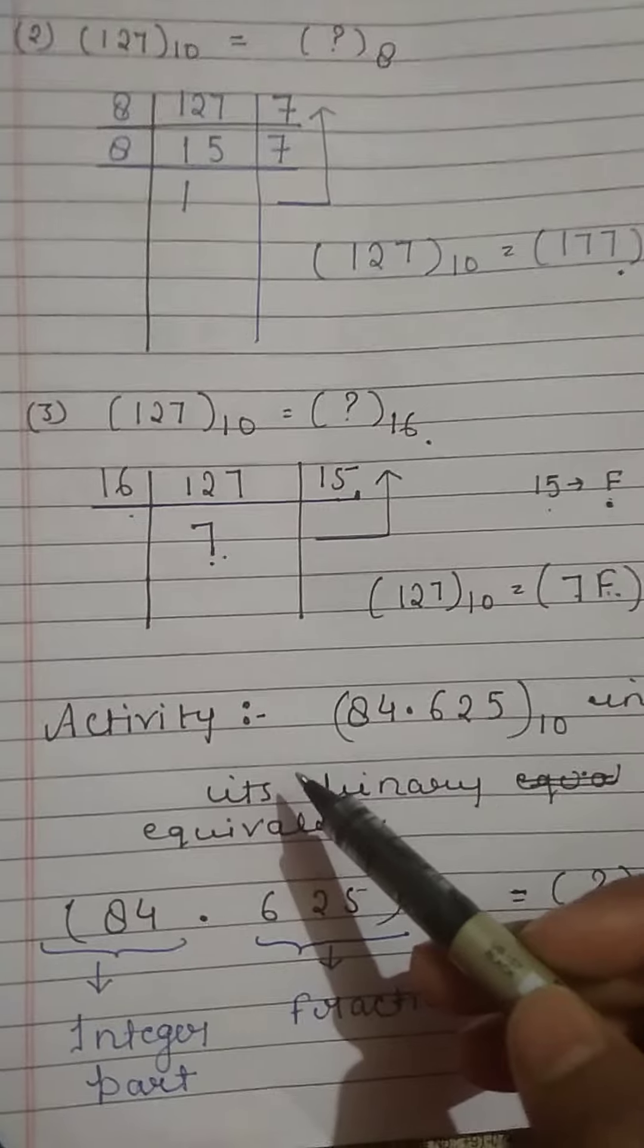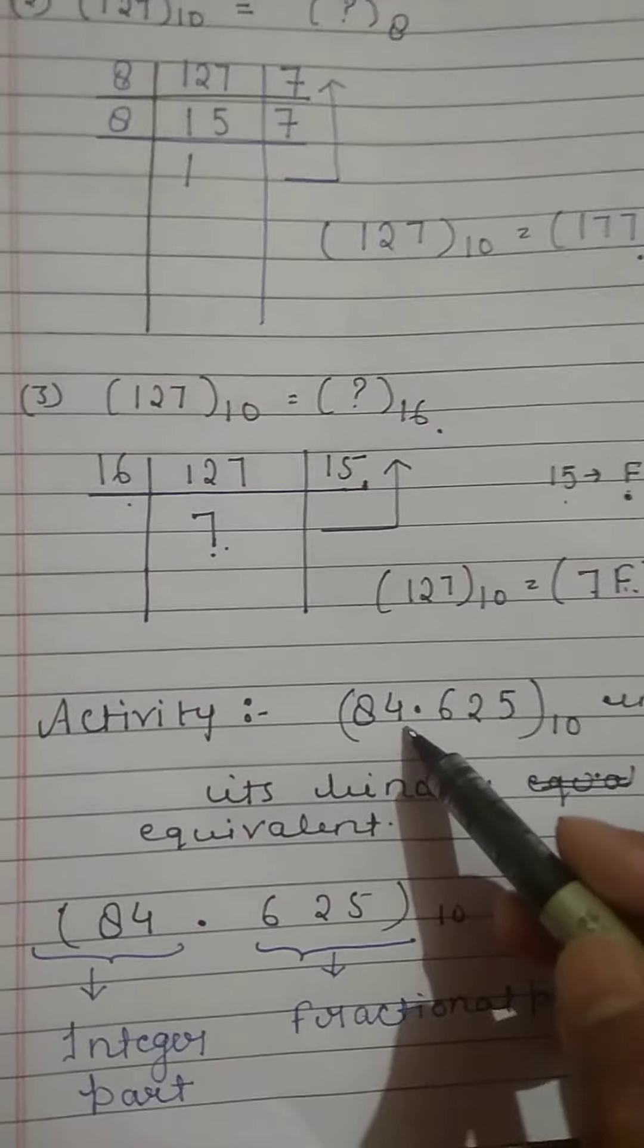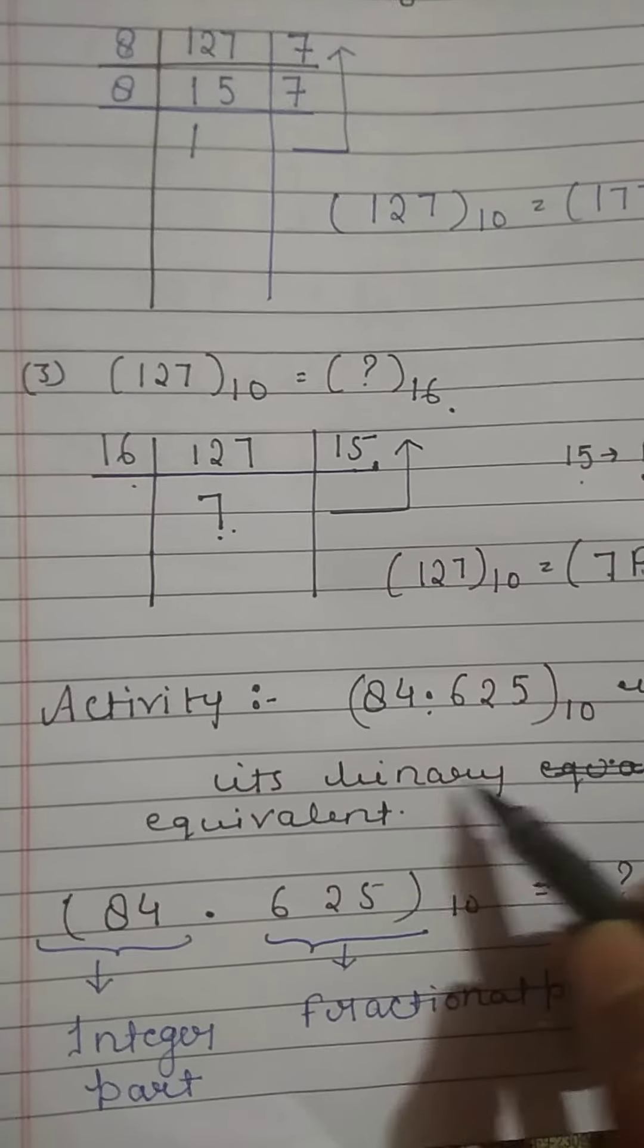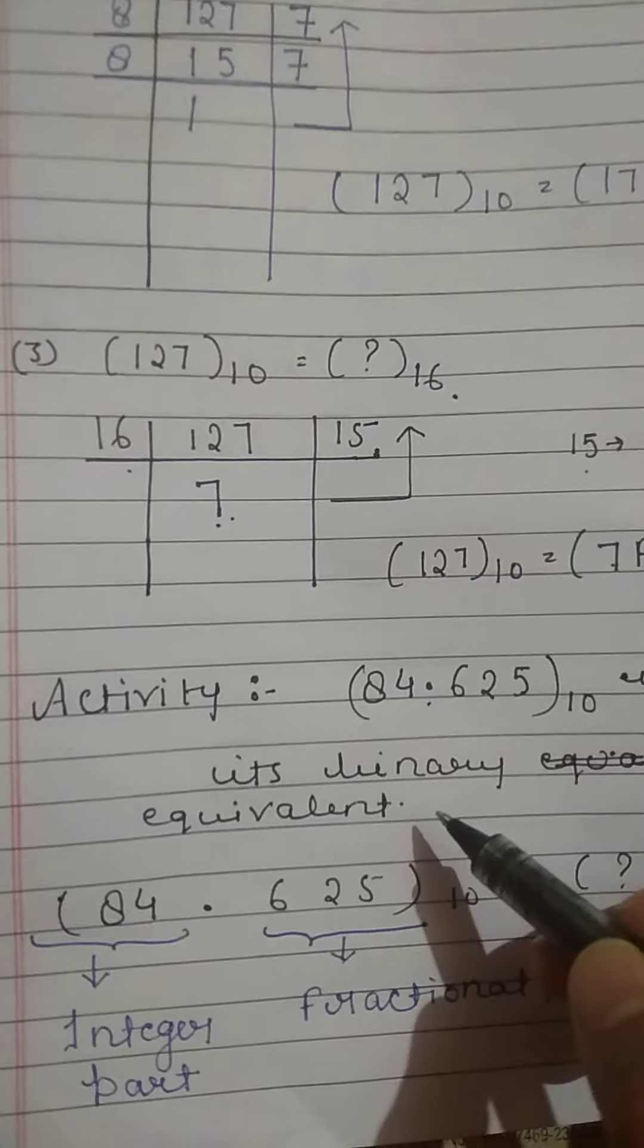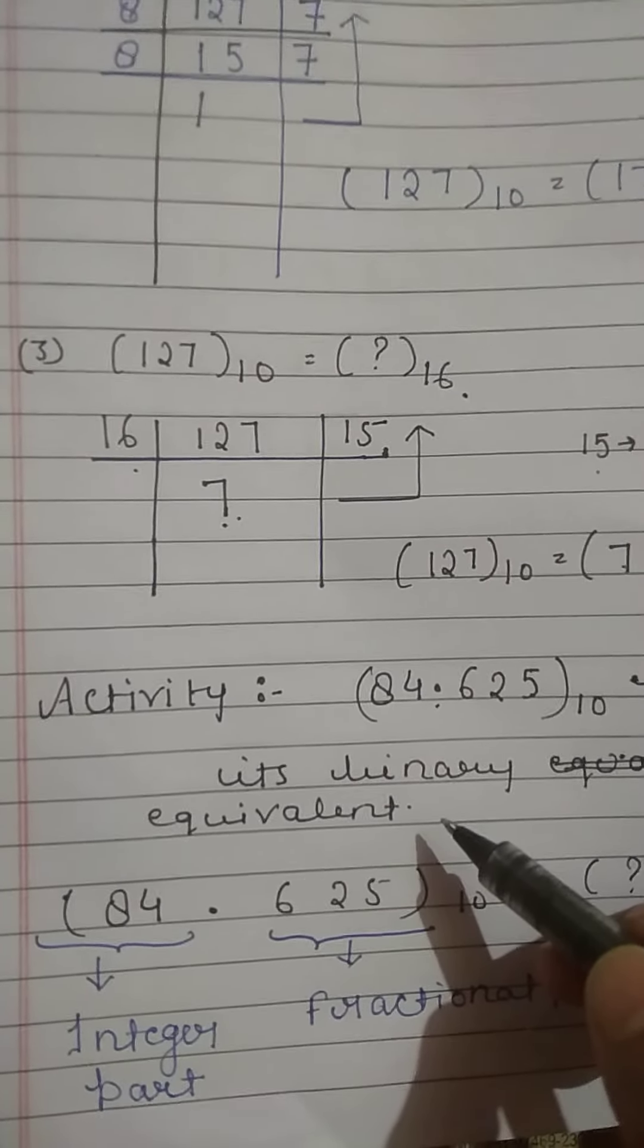Now we will do an activity. For example, we have a decimal number 84.625 and we have to convert it to binary equivalent. First we need to understand how to convert with a decimal point.